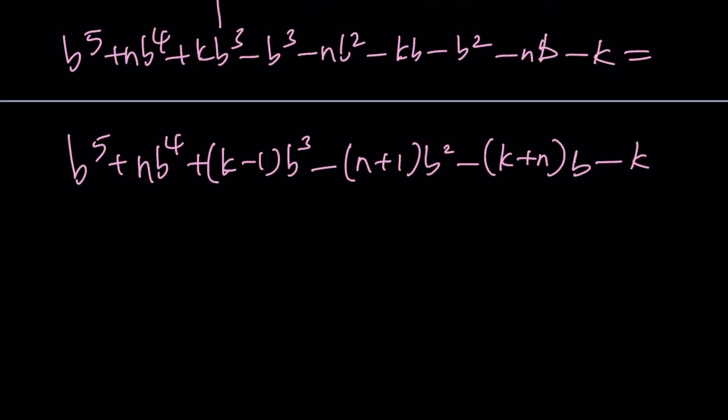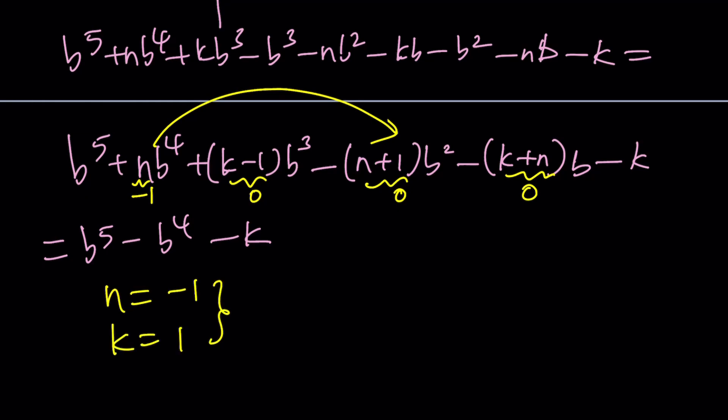Now, when you compare this to b to the fifth minus b to the fourth minus k, this means the coefficient of b to the fourth is negative one. There's no b cubed, so the coefficient of b cubed is zero. The coefficient of b squared is also zero, which verifies n equals negative one one more time. And this needs to be a zero as well. But notice that from here, we get n equals negative one, k equals one, and n plus k equals zero, which are all satisfied.